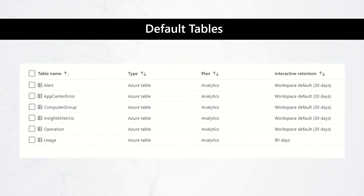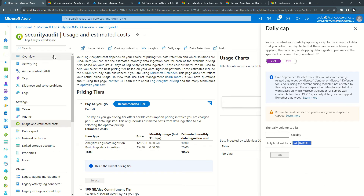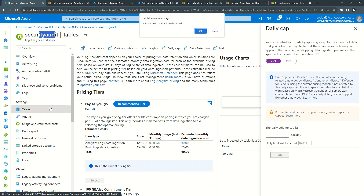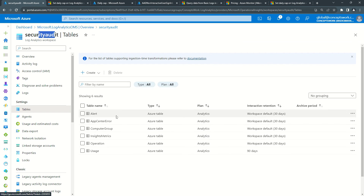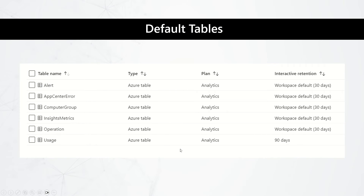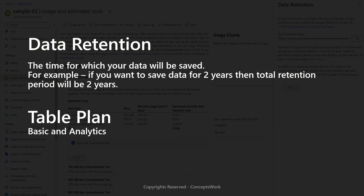Whenever you create a workspace, some tables are created by default and they have their own purpose. Irrespective of the service type, these six tables will exist by default. The workspace we just created shows these six tables under the Tables section, and one aspect visible here is the Type (Azure Table Plan), which shows Analytics, and interactive retention shows as workspace default at 30 days.